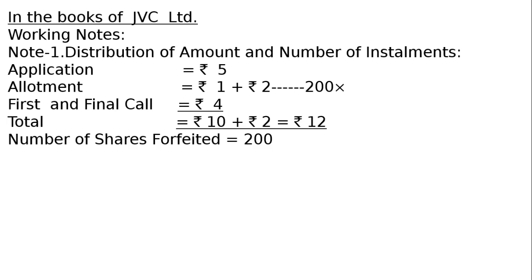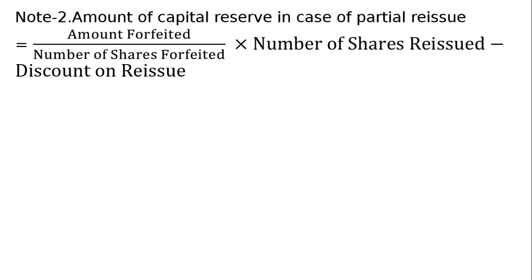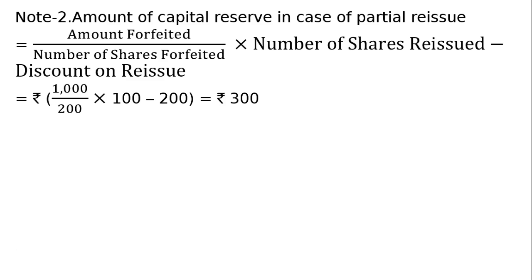Number of shares forfeited: 200. Number of shares reissued: 100. Working Note 2: Amount of capital reserve in case of partial reissue. Formula: (Amount forfeited ÷ Number of shares forfeited) × Number of shares reissued − Discount on reissue. Discount on reissue is 100 × Rs. 2 = Rs. 200. Capital reserve = Rs. 300.